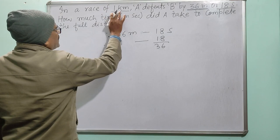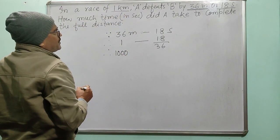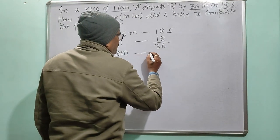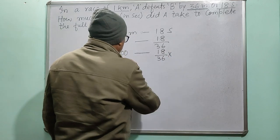Total is 1 kilometer, that is 1000 meters. So 18 by 36 into 1000.